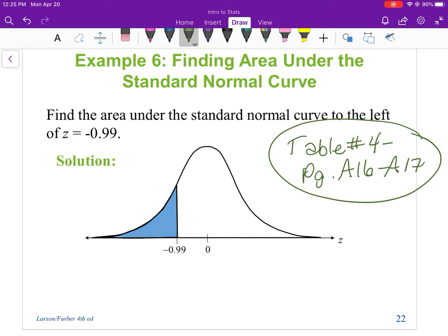Okay, once you're there, you're going to run your finger down to negative .9 and then over to .09 and you should be getting 0.1611.